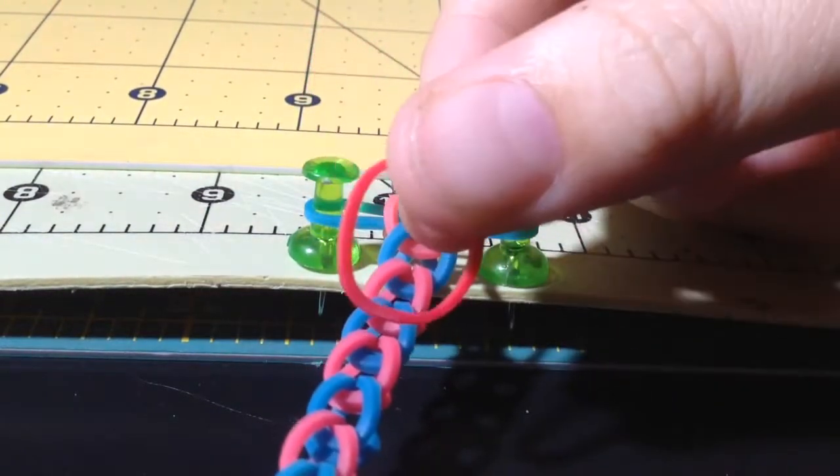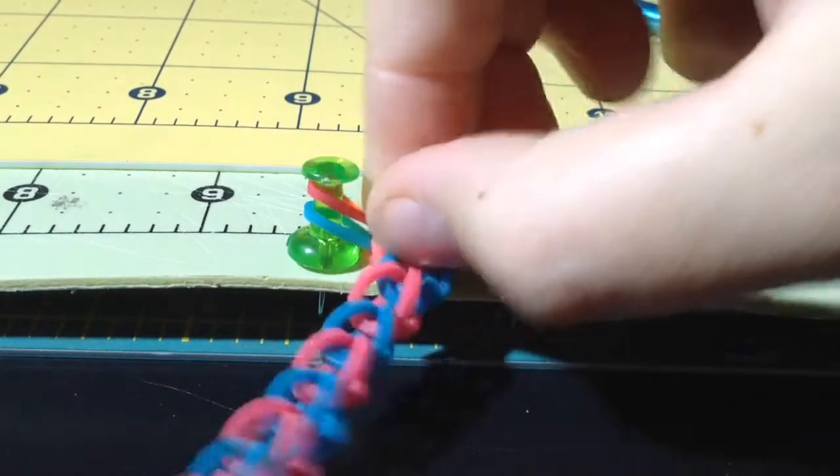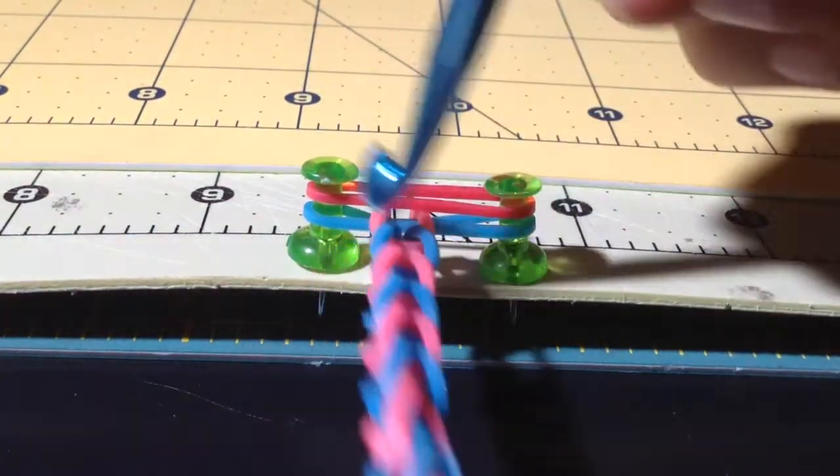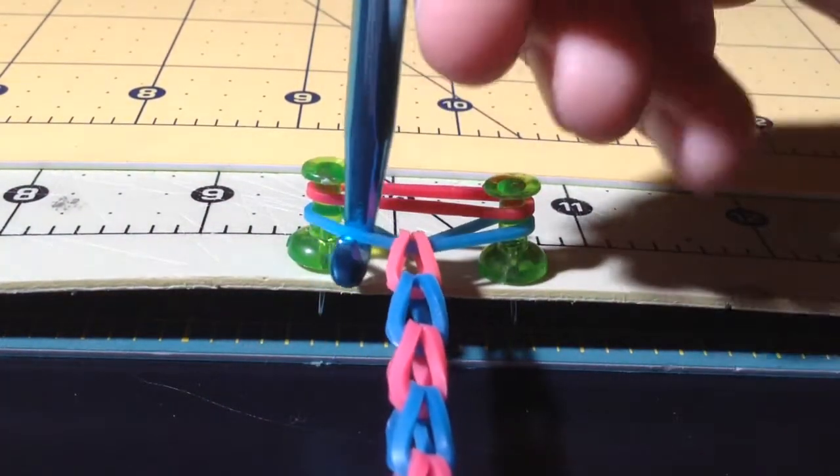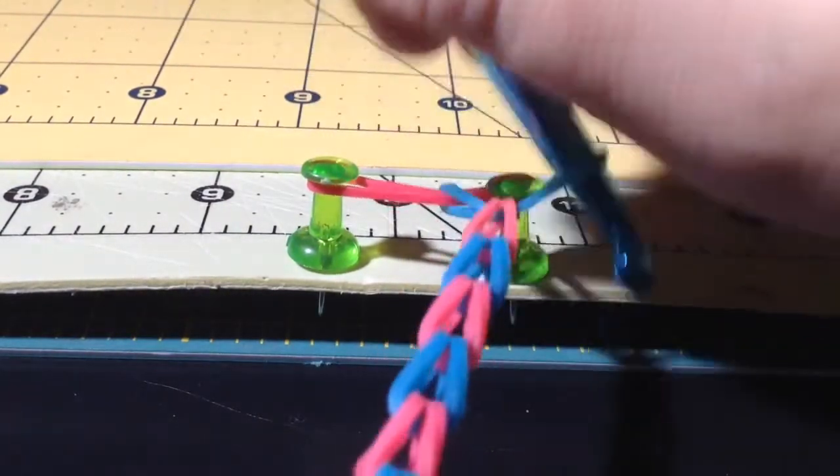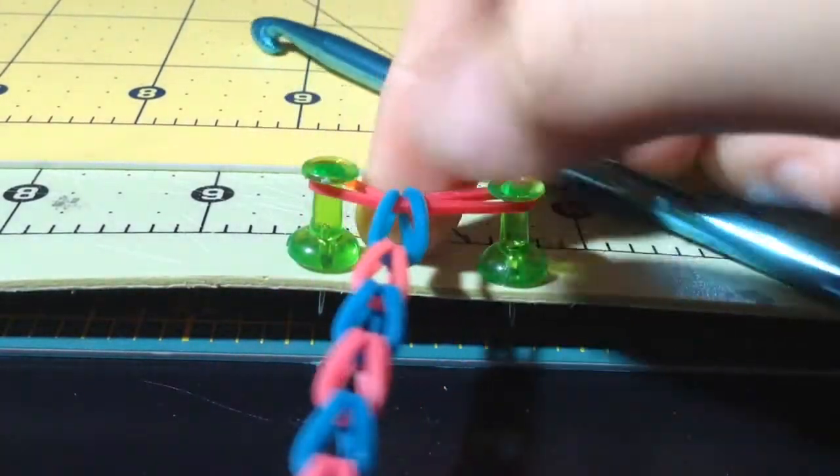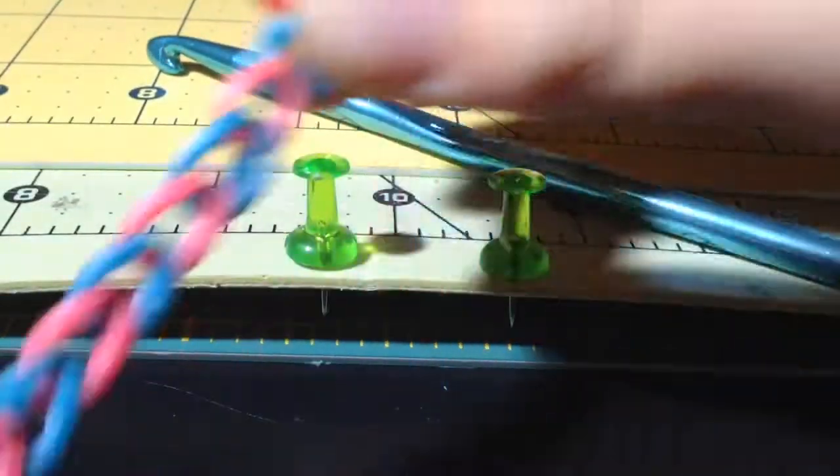So to finish it off, what you're going to do is just take one. It doesn't matter what color because it won't be on the bracelet. Just put it on like you normally would. And then you're going to take it and bring it up like you normally would. And then what you're going to do is tightly hold on to it and take it off the loom.